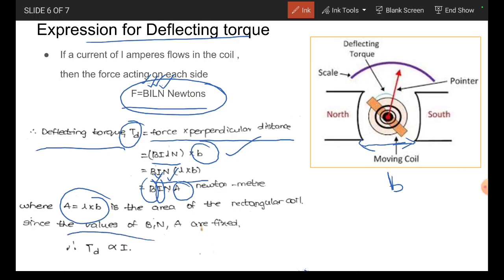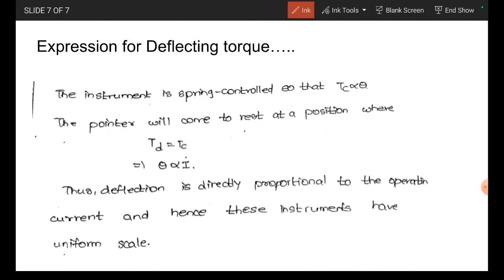Therefore, Td is directly proportional to I. Then, the instrument is spring controlled, so that Tc is proportional to theta. The pointer will come to rest at a position where Td is equal to Tc, and this condition is called equilibrium condition. Therefore, theta is proportional to I.